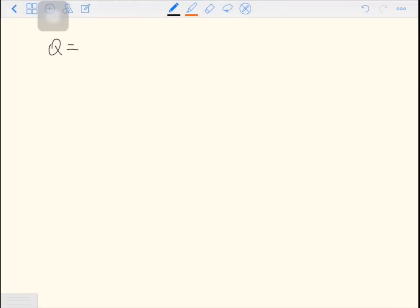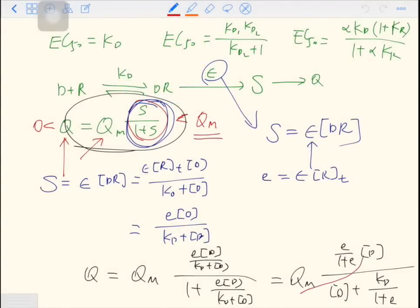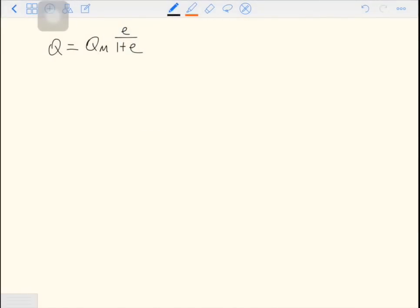So now you can see the Qmax and the EC50 of the system. As we mentioned, Q is a fraction of Qm, the fraction is E over 1 plus E, as stated here. So this is the Qmax, is a fraction of Qm. What about EC50? EC50 is Kd over 1 plus E. So now you can see the EC50 depends on Kd and E. E is epsilon times RT. Therefore, EC50 depends on the total number of the receptors.